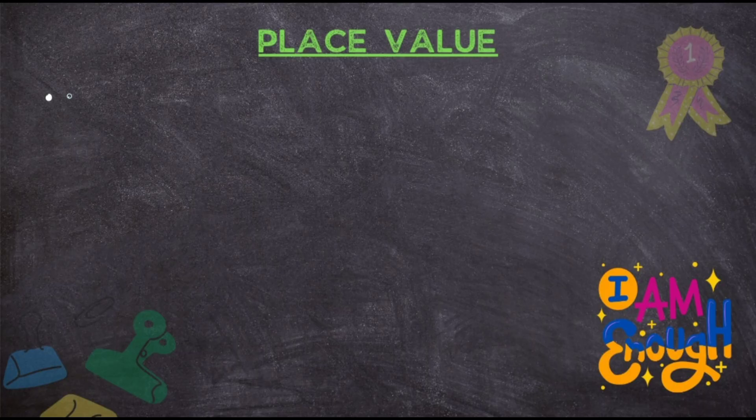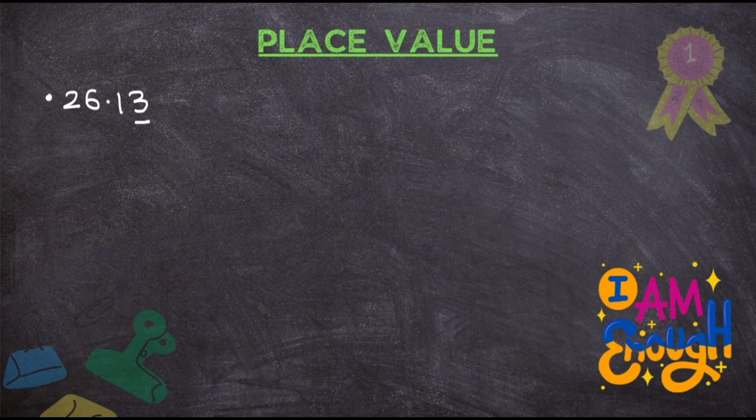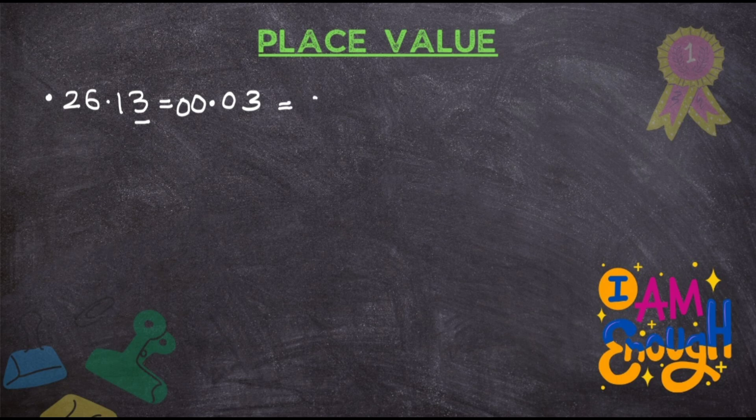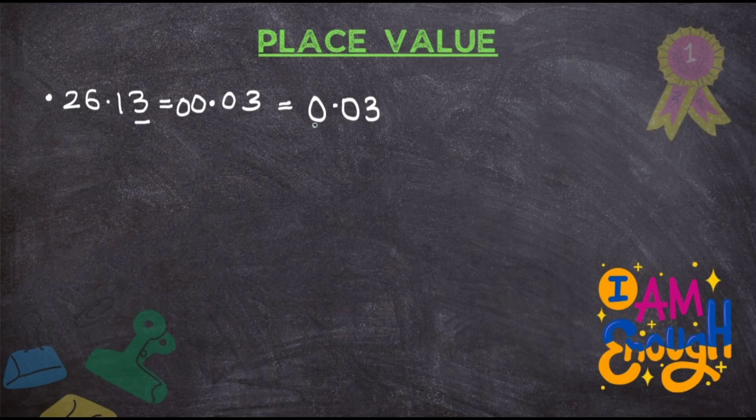The first question I will take is 26.13 where 3 is underlined. Now, here what you have to do? Please do not get confused. It is very easy. The first thing you have to do is just write the number that is underlined first. That is 3. Now, write all the numbers as 0. Which number is before 3? It is 1, so write it as 0. Then there is a point before that. Put that point. Then there is a 6, put it as 0. And there is 2, put it as 0. Which you can write as 0.03. You do not have to write the 0 again. Two 0s you do not need before the point. So your answer will be 0.03. As simple as that.